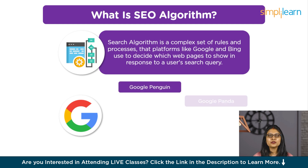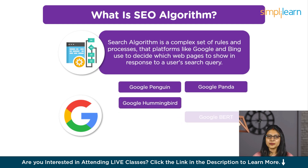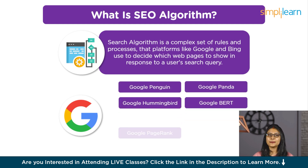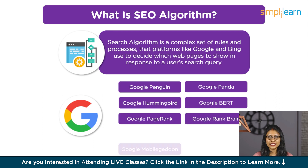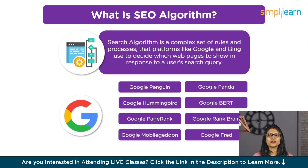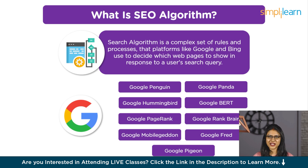There are several search algorithms with respect to various search engines like Google and Bing. A few Google search algorithms are listed below: Google Penguin, Google Panda, Google Hummingbird, Google BERT, Google PageRank, Google RankBrain, Google Mobile Mobilegeddon, Google Fred, and Google Pigeon. So let's have a look at them one by one.